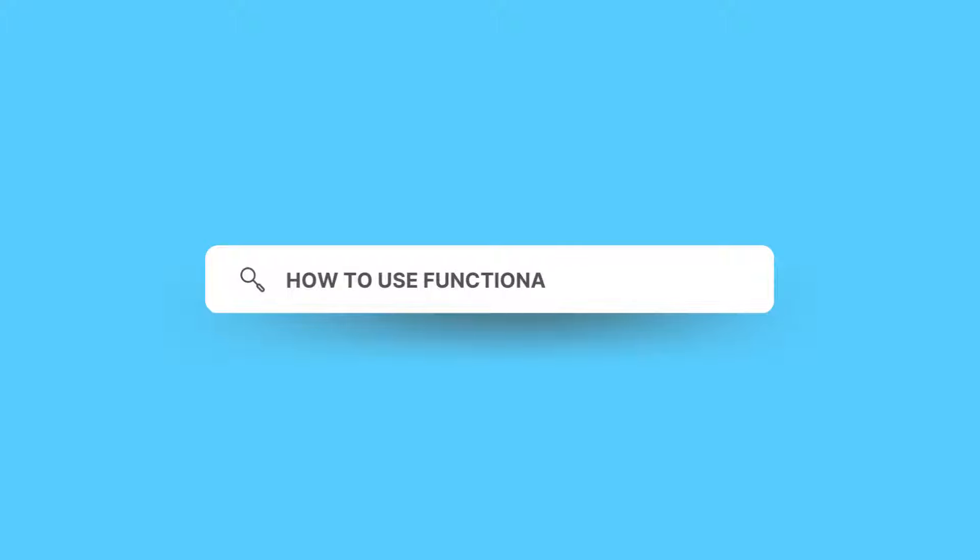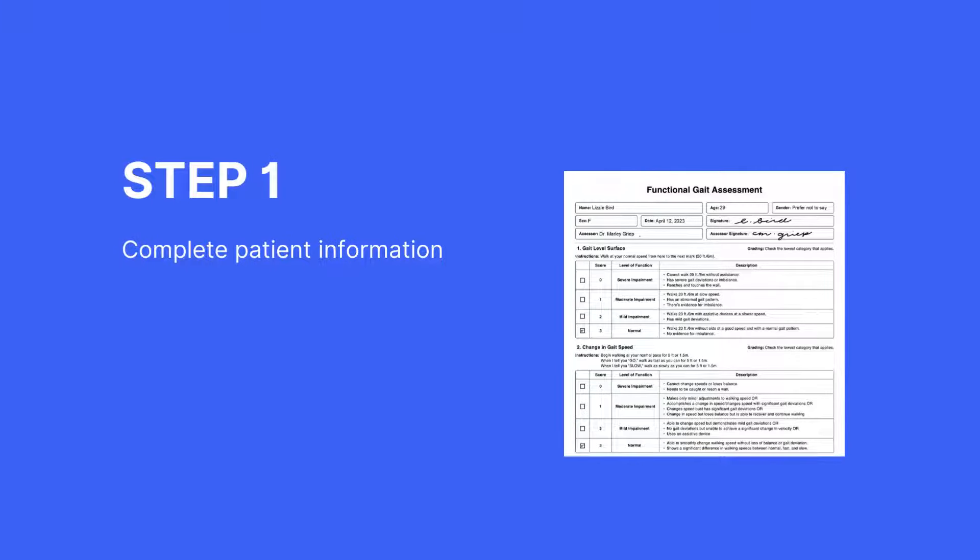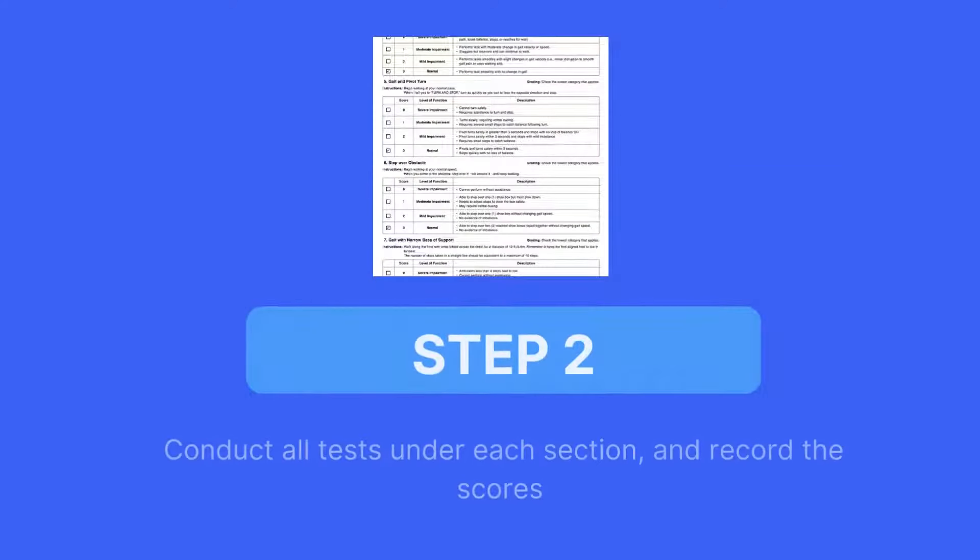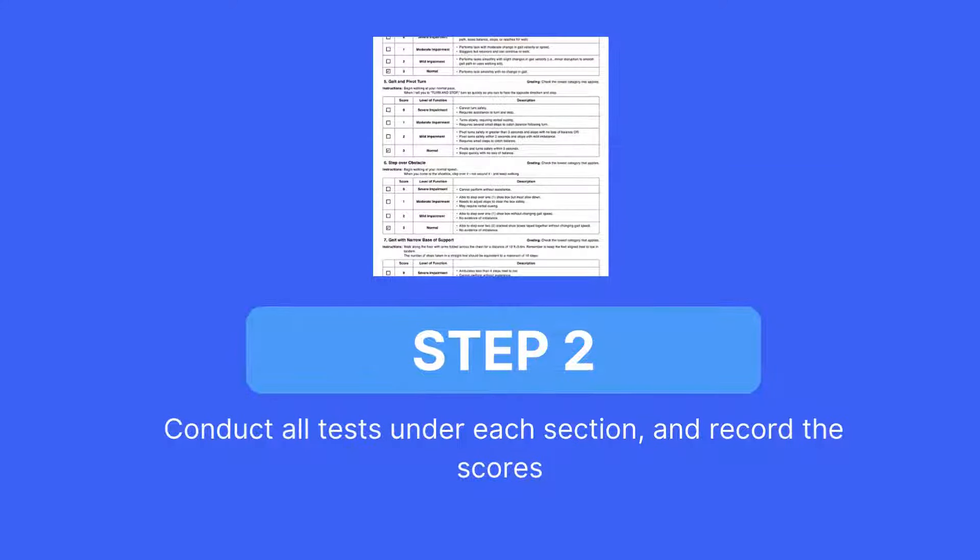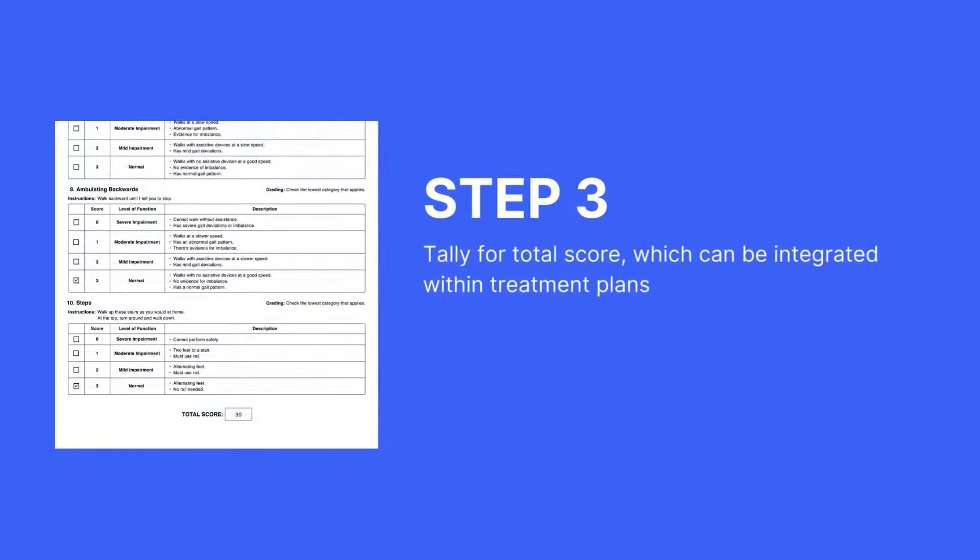Here's how to use the Functional Gait Test effectively. The first step is to complete the patient information. You'll then need to conduct all tests under each section and record the scores. You'll then need to tally the total, which can be integrated within treatment plans.